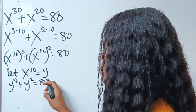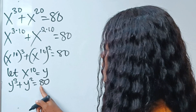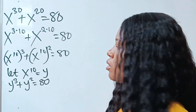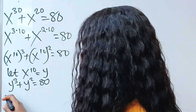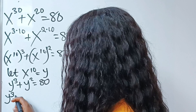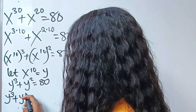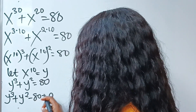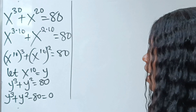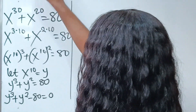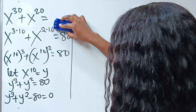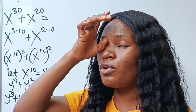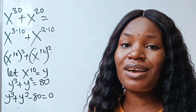We just formed a cubic polynomial, so let's arrange it properly. We have y to the power of 3 plus y squared minus 80 is equal to zero.